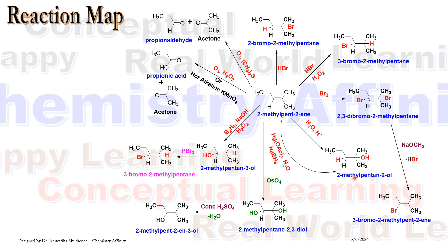The same product we can get from this alkene molecule by the oxymercuration-demercuration process. Next reaction is the hydroboration-oxidation of the alkene molecule. Here we will be getting alcohol, but OH attacks to the less substituted carbon and hydrogen attacks to the more substituted carbon. So we are getting 2-methyl pentane-3-ol.